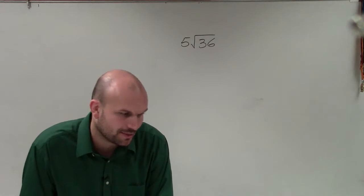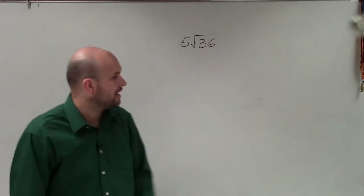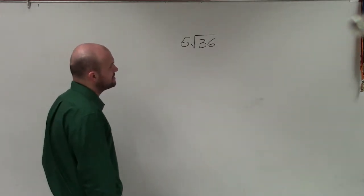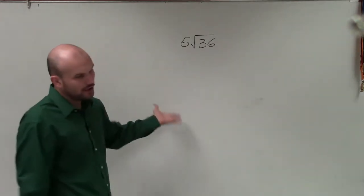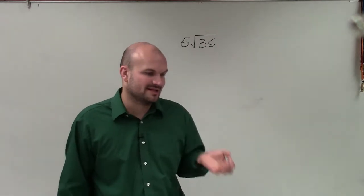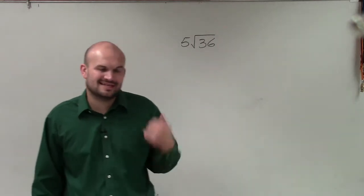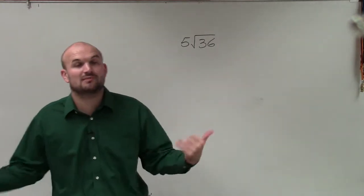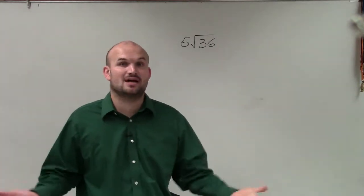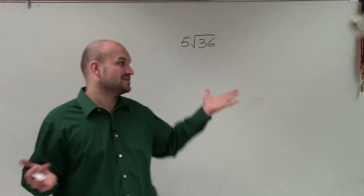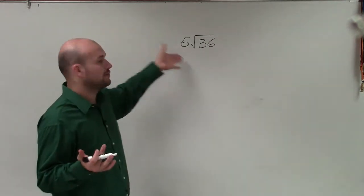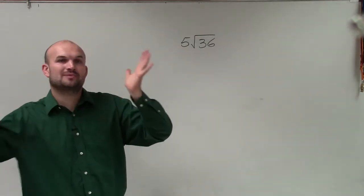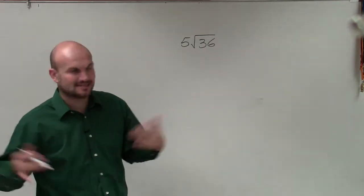There are a couple different ways I like to do this. We're looking at the square root of 36. The easiest way is to understand what number multiplied by itself gives us 36, and that answer is going to be 6.